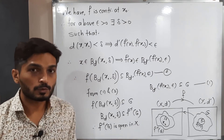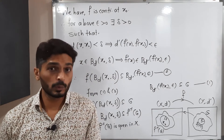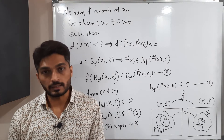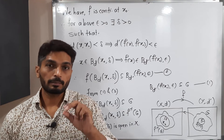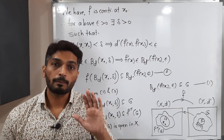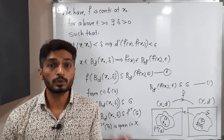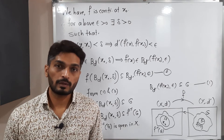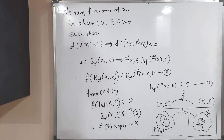We started with x₀ as an arbitrary point in f inverse of G, and we proved there is an open ball around x₀ which is a subset of f inverse of G. This is the definition of an open set. Therefore, f inverse of G is open in X. That means statement 1 implies statement 2 is proved. Now we have to go in the reverse direction.